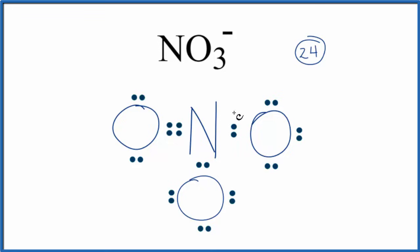If we check the formal charges here, they'll look like this. We'd prefer to have them closer to zero. We do need a negative one to match the charge here on the nitrate ion. We would prefer that these would be closer to zero, but there's really no way we can do that.